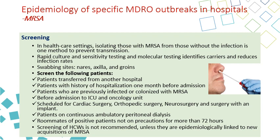Screening is usually done for patients transferred from another hospital, patients admitted to certain units like ICU or oncology, patients previously known to be colonized with MRSA as flagged on the system, patients scheduled for major surgery like cardiac surgery, patients on continuous ambulatory peritoneal dialysis, and roommates of positive cases not on precautions for more than 72 hours.